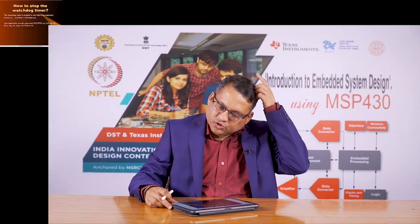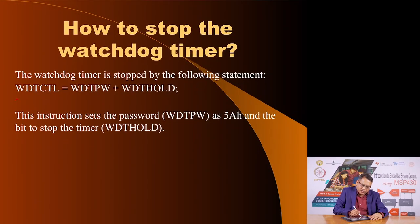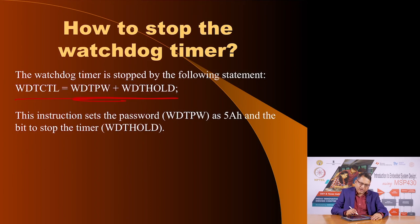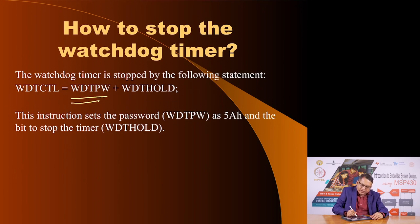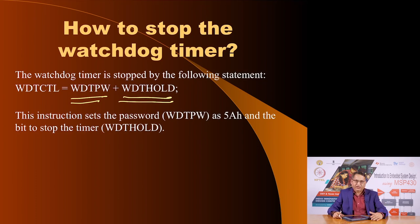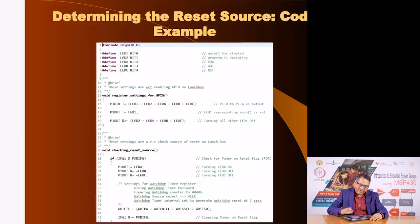To stop the watchdog timer, you write two values into the watchdog timer control register: the upper byte supplies the password, and the lower byte tells it to stop the watchdog timer. We will see how this is used in our program example.